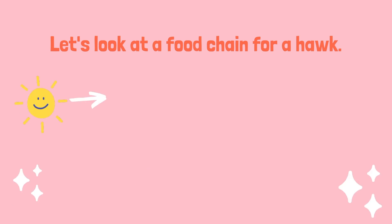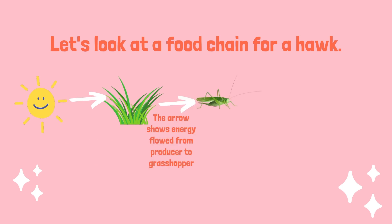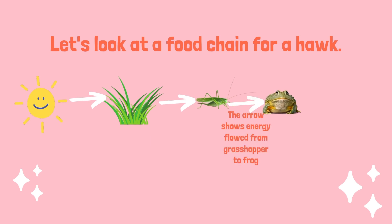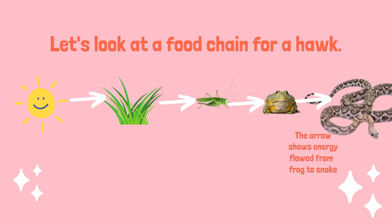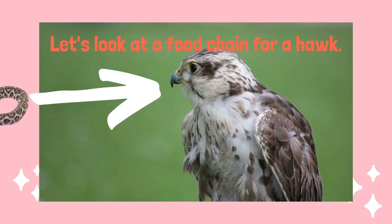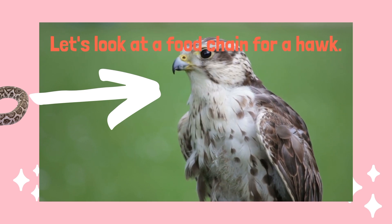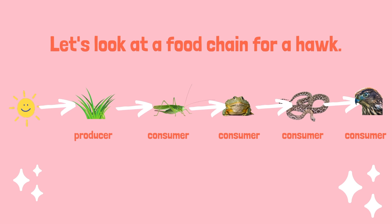Let's look at a food chain for a hawk. The initial source of energy, as in any food chain, would start with the sun. The sun's energy would be transferred to the grass. The arrow shows the transfer of energy from sun to grass. Then grass energy goes to the grasshopper. Grasshopper energy flows to the frog when it's eaten by the frog. The frog's food energy transfers to the snake when it's eaten by the snake. And the snake's energy would transfer to the hawk.